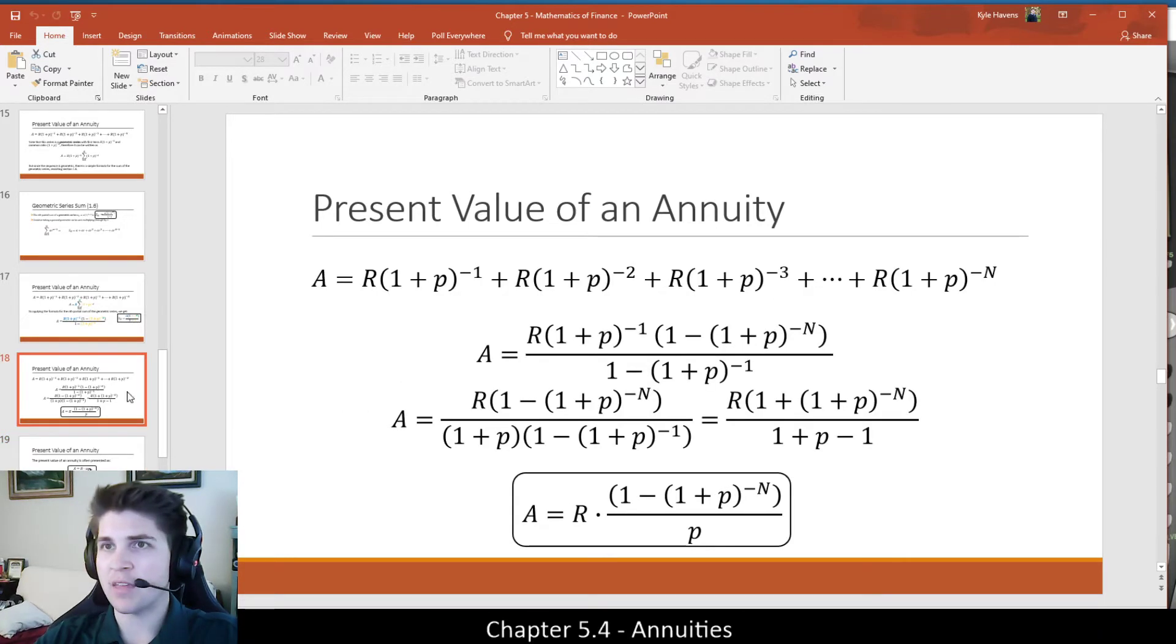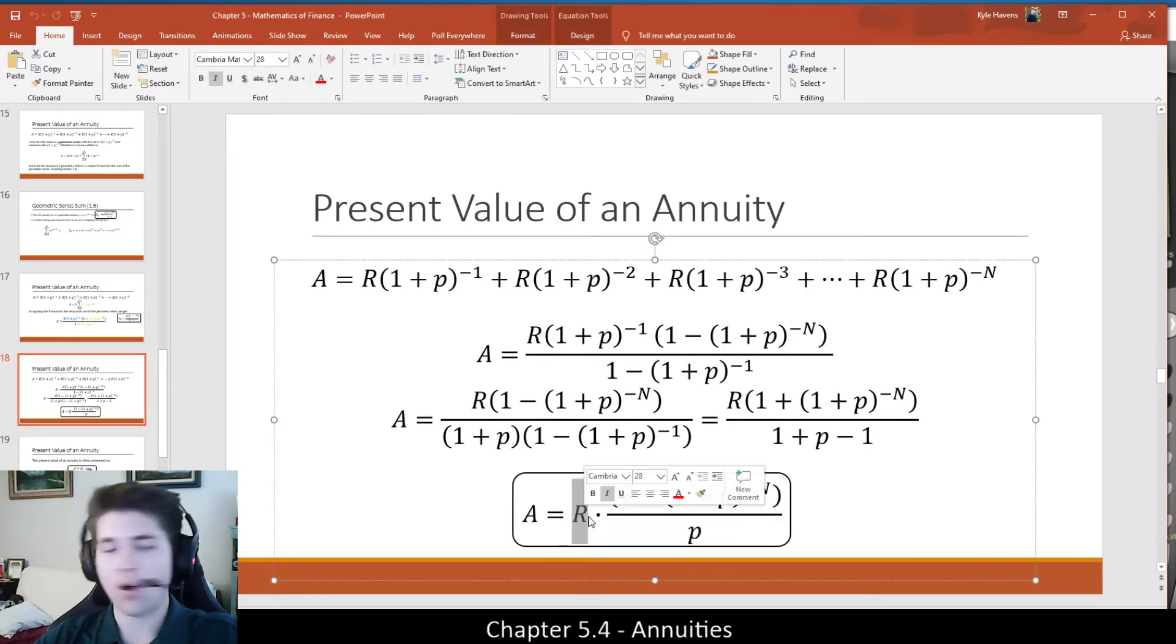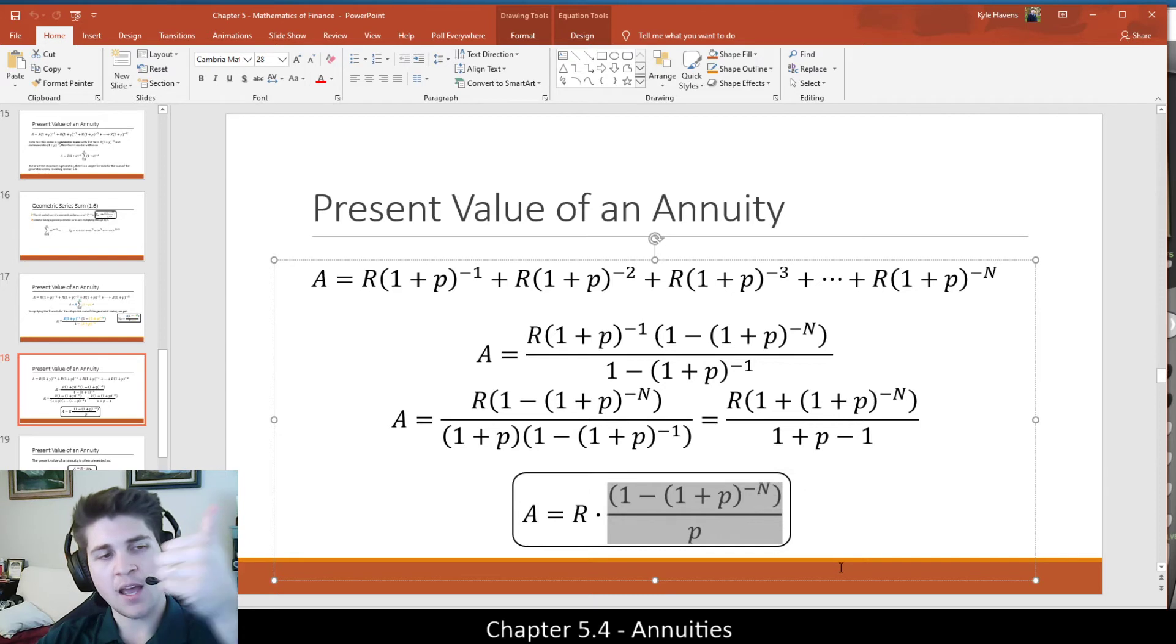And also, if we think about this formula, it's A equals R, which is the payment amount, times this ratio. So this ratio is unique to what is the interest rate and what is the for how long, and that's kind of a uniquely controlling factor. And if I take those two parameters and multiply by simply how much the payment is, it will give me the net present value of the annuity as such.